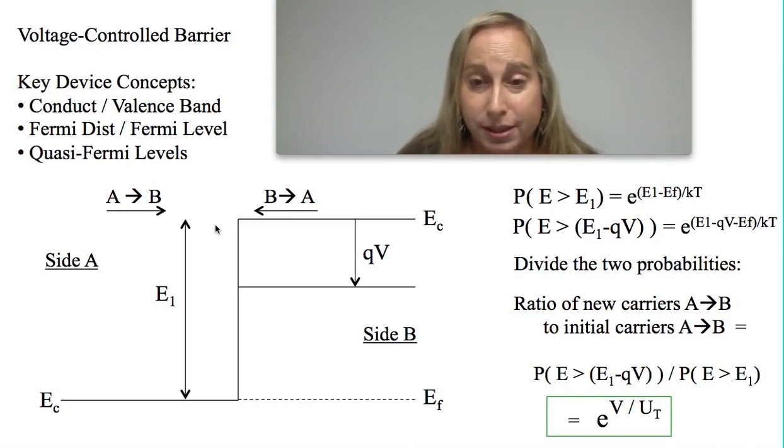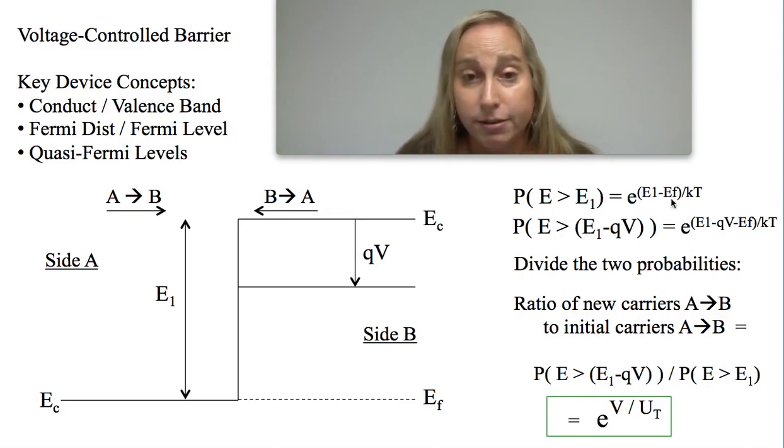The question becomes, if I'm significantly above the Fermi level, how would I approximate it? It turns out to be roughly an exponential function. The probability of energy being above E1, the probability of having an electron at least at E1 or higher, is effectively proportional to e to the E1 minus the Fermi level over kT. You can be rigorous about this by integrating over all those states, but if I take an integral of an exponential function, I basically get that function back with some constants.